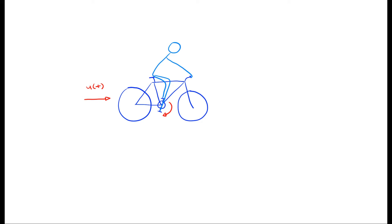The output, on the other hand, is the resulting forward velocity you get by turning the cranks. We call this v.